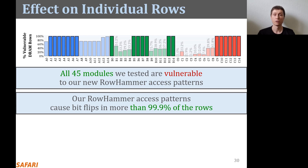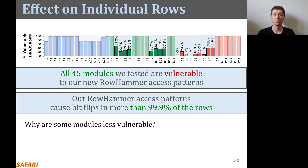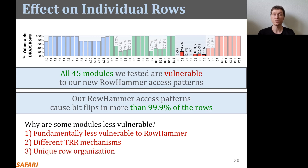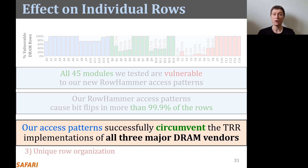Why are some modules less vulnerable? We find three main reasons. First, some modules are fundamentally less vulnerable to RowHammer, meaning rows can tolerate a higher number of hammers before experiencing bit flips. Second, some modules implement a different TRR mechanism that our custom access patterns are not as effective against — understanding those mechanisms more can help craft more effective patterns. Third, some vendor C modules implement a unique row organization that appears to mitigate RowHammer at the DRAM circuit level. We conclude that although some modules are less vulnerable, our access patterns successfully circumvent the TRR implementations of all three major DRAM vendors.